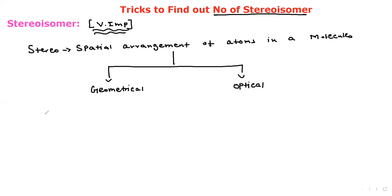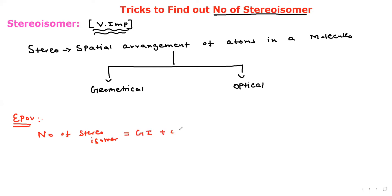In the exam point of view, if the examiner asks the number of stereoisomers, we have to calculate both geometrical isomerism plus optical isomerism. So the total stereoisomer count includes both geometrical and optical isomers.